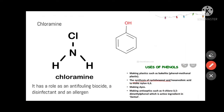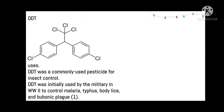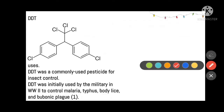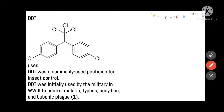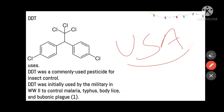Next is DDT. DDT was commonly used as a pesticide and insecticide for insect control. It was initially used by the American military in World War II to control malaria, typhus, body lice, and bubonic plague.